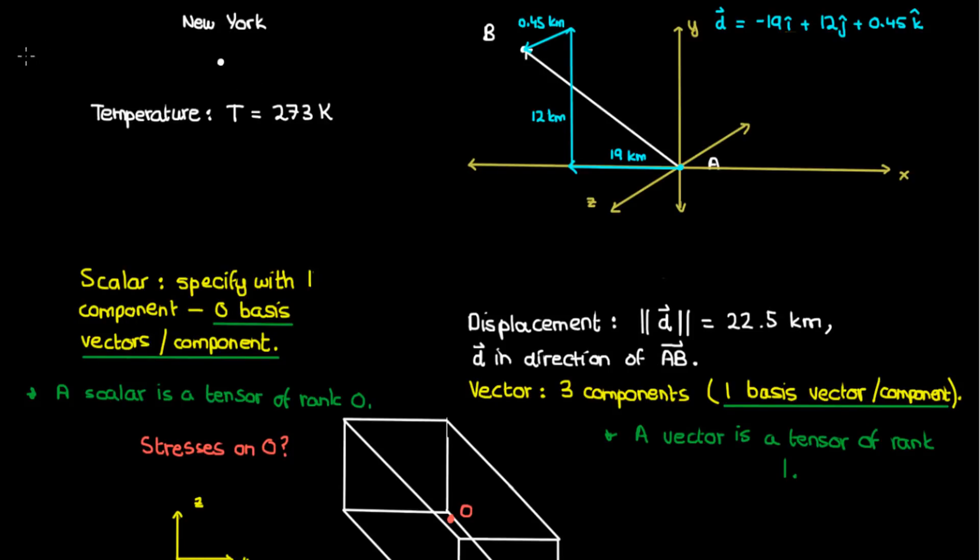We'll begin by looking at the temperature in New York. If my coordinate system starts out like this with coordinates x, y, and z, and if I change the coordinates to get a new system with x prime, y prime, and z prime, then will the change in coordinate systems change the temperature? Of course not.